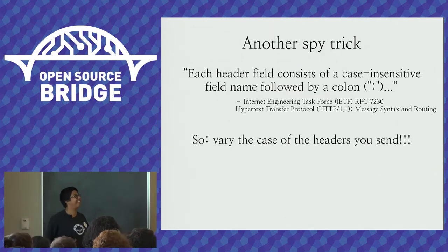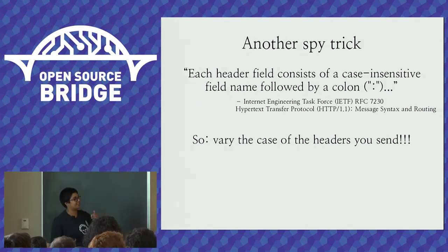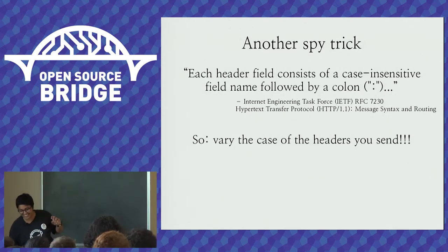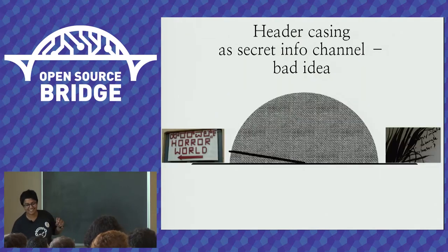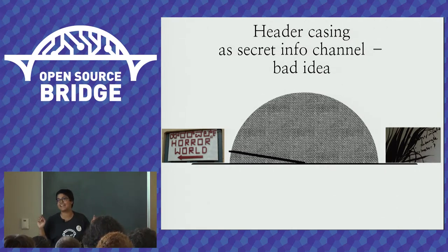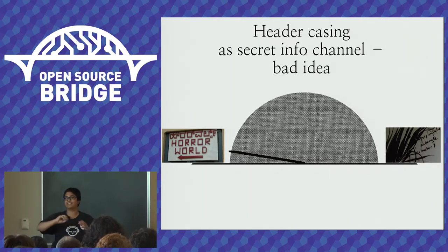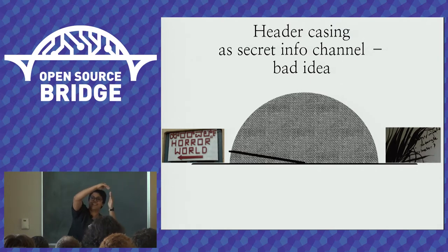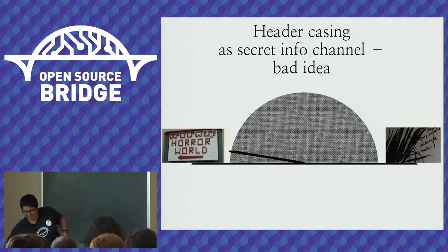Here's another spy trick: did you know that headers are case-insensitive according to the spec? So you could vary the case of headers you send as a way to send secret messages. This is a bad idea — whatever your threat model, I think they'll catch on. The threat model flowchart shows all the different threats leading to the same conclusion: 'I think they'll catch on.'